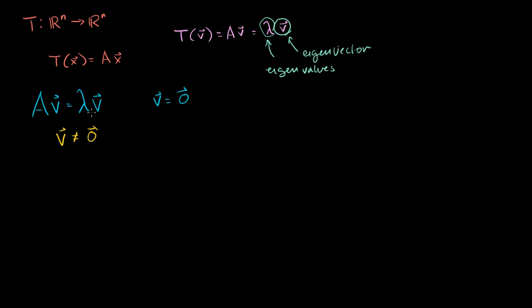Given that, let's see if we can play around with this equation a little bit and see if we can come up with eigenvalues maybe in this video. So we subtract A v from both sides. We get the 0 vector equals lambda v minus A times v.